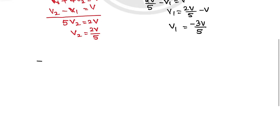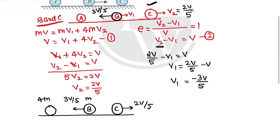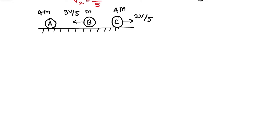Since B is moving left, it will now collide with A. Just after the first collision: C moves right at 2V/5, B moves left at 3V/5, and ball A (mass 4M) is stationary. The next collision is between A and B. Let me write the elastic collision formula for revision: V1_final = (M1 minus M2)/(M1 plus M2) times U1, and V2_final = 2M1/(M1 plus M2) times U1, since U2 = 0.